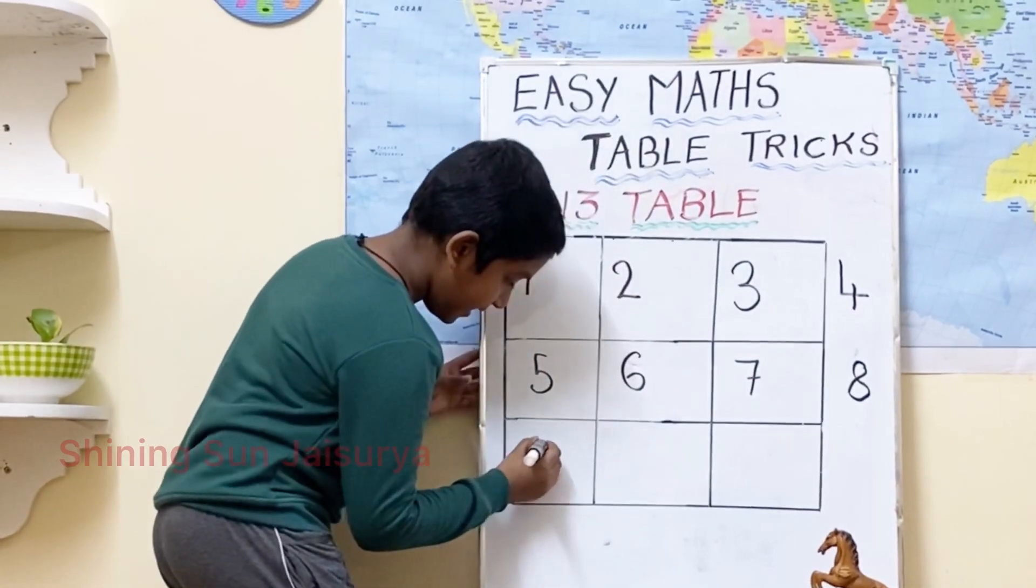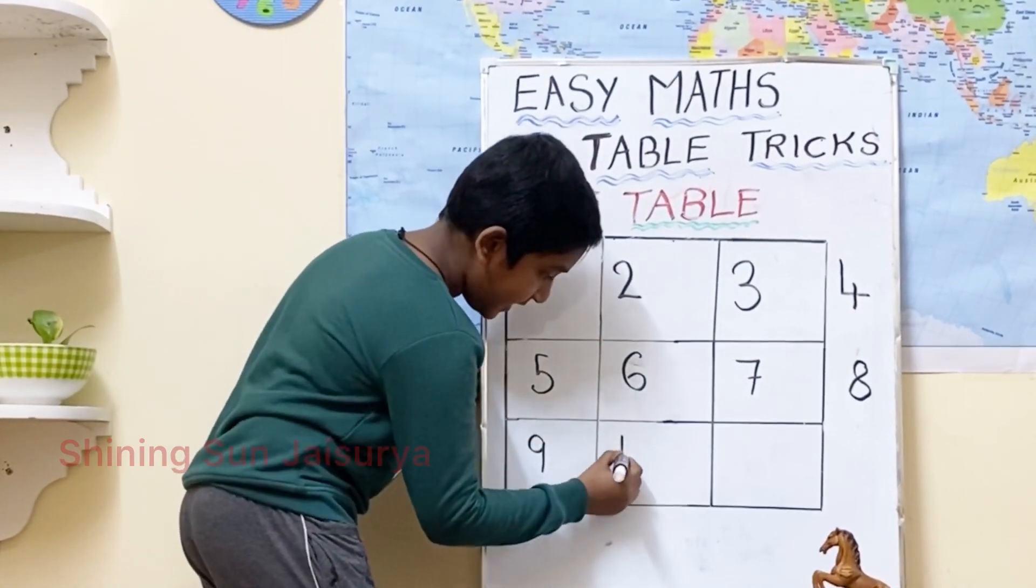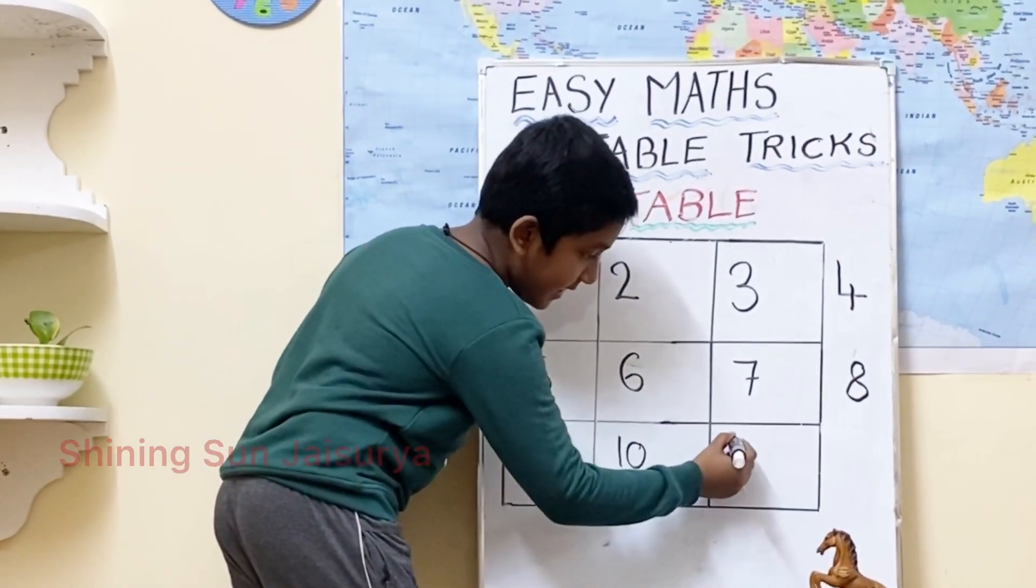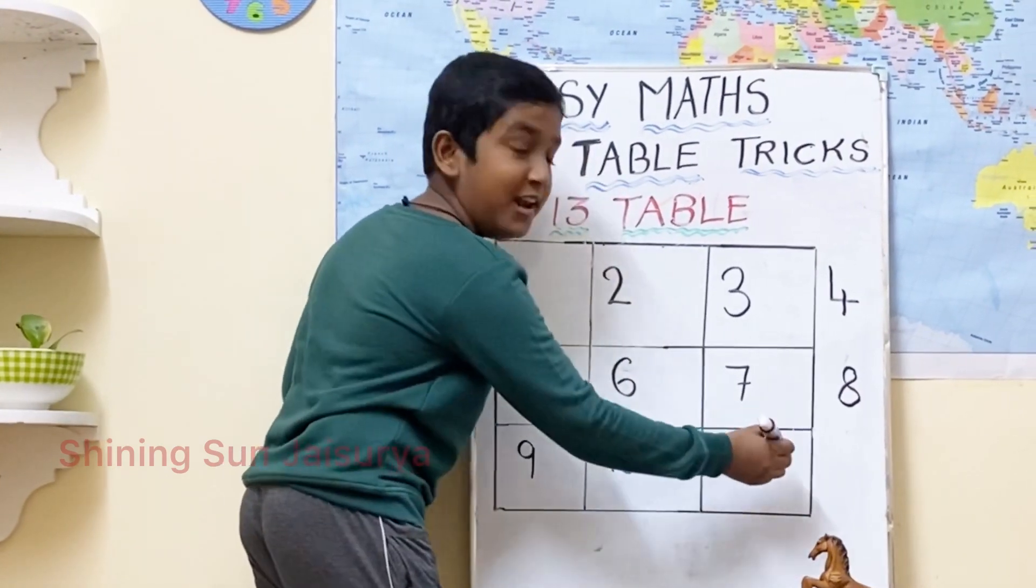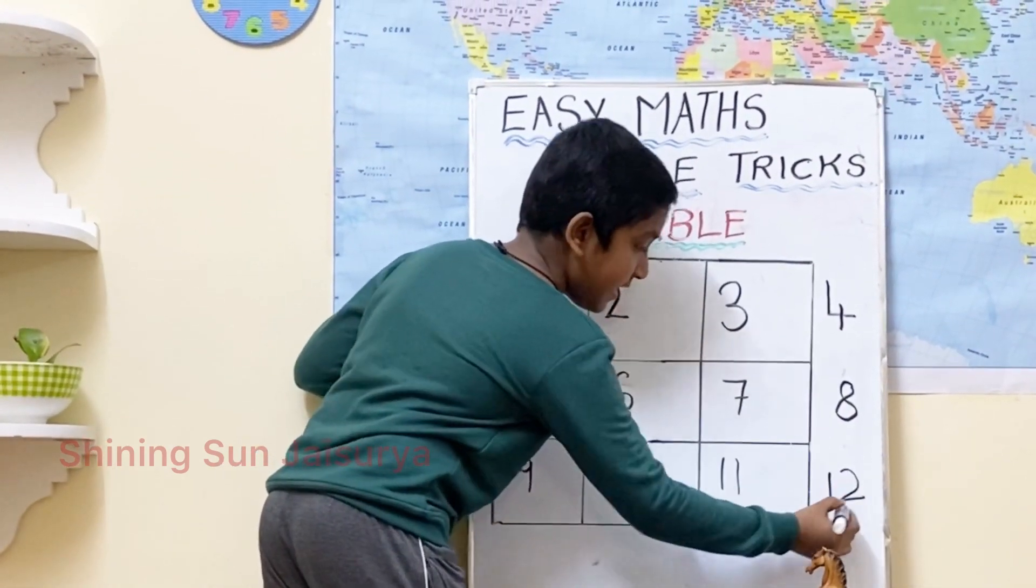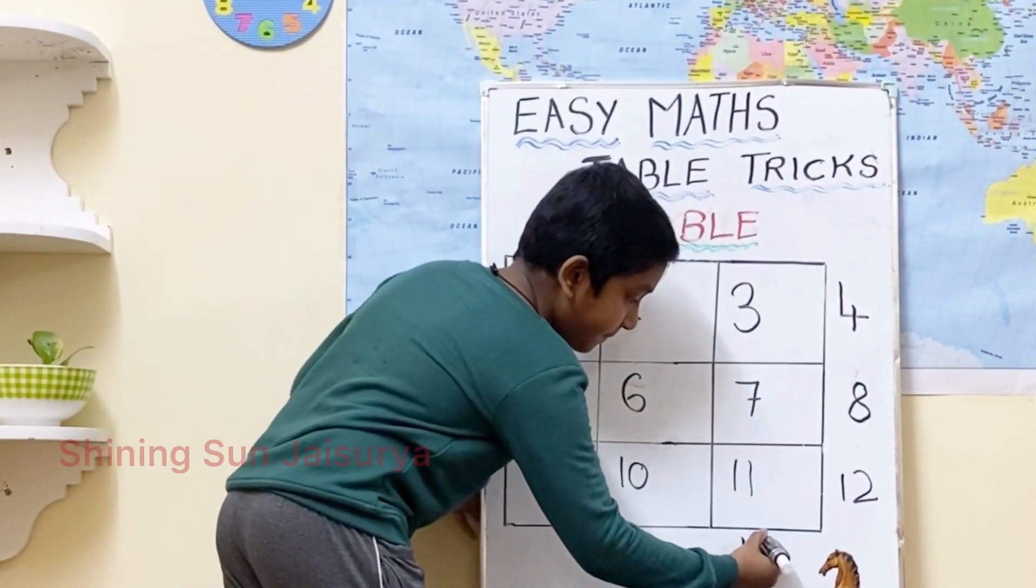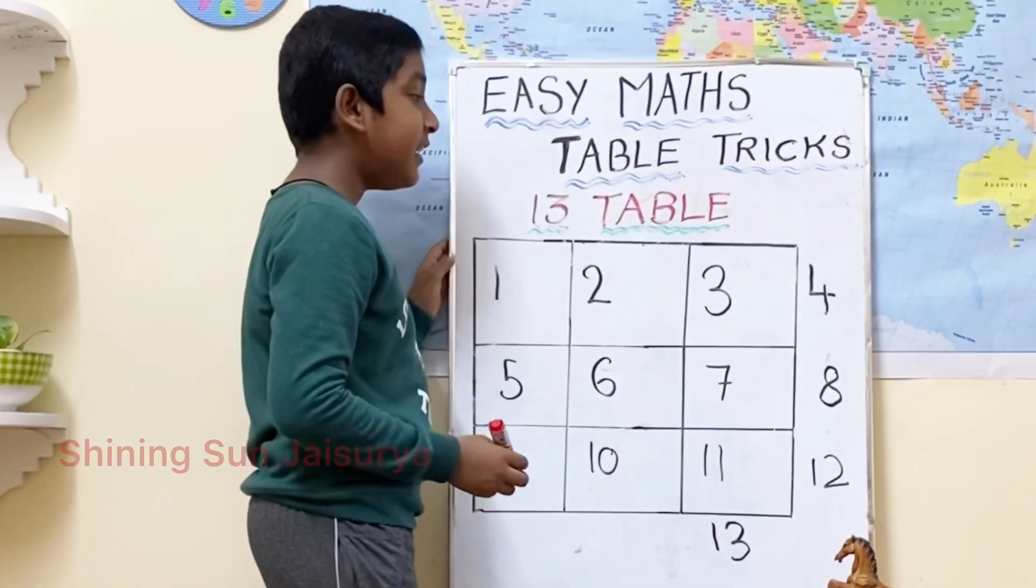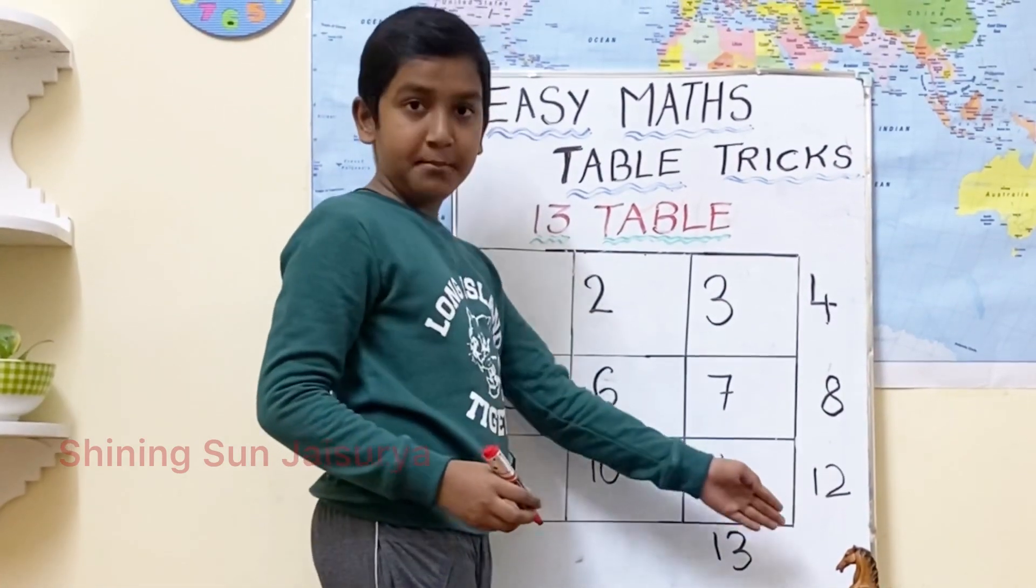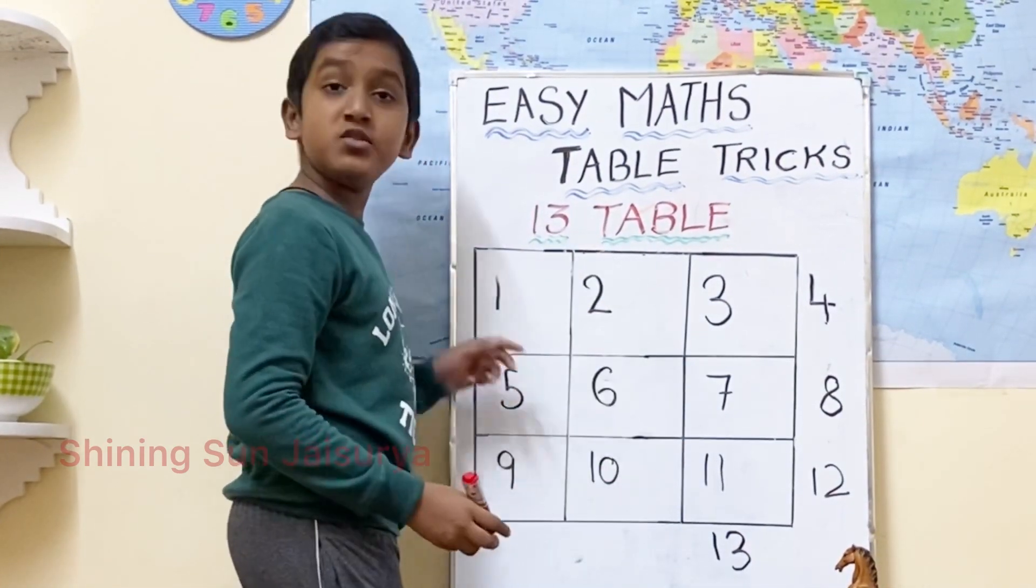9, 10, 11, write 12 outside. And write the 13 down. 13. Now let's cross the 3 numbers which we have written outside the magic box.